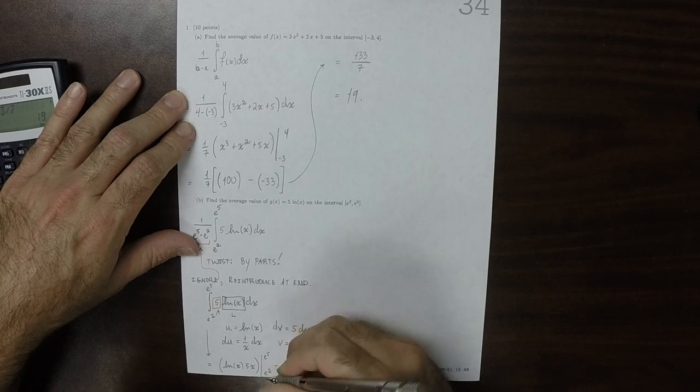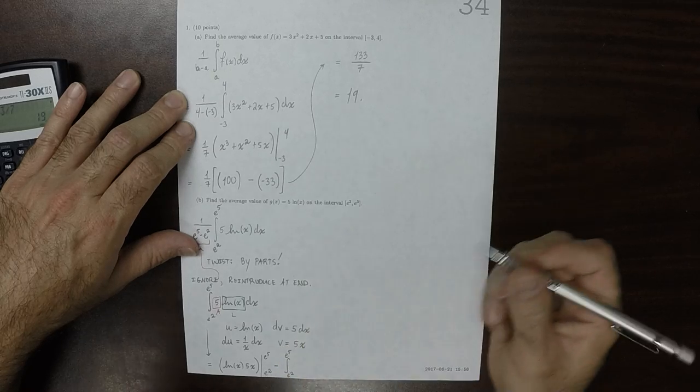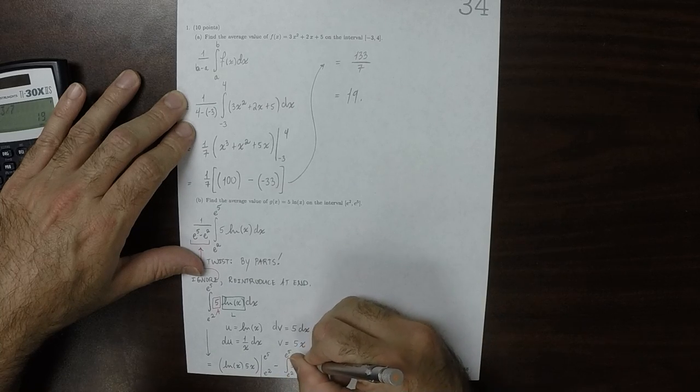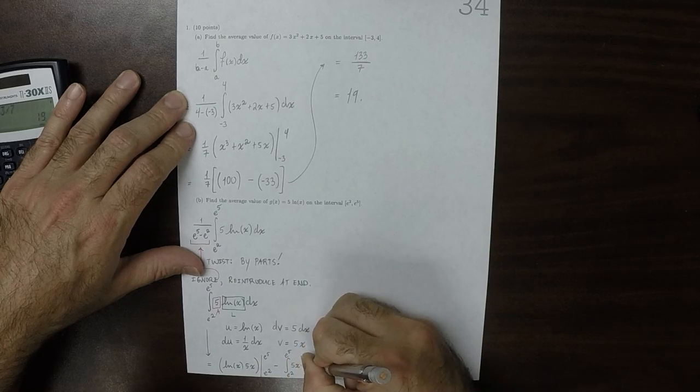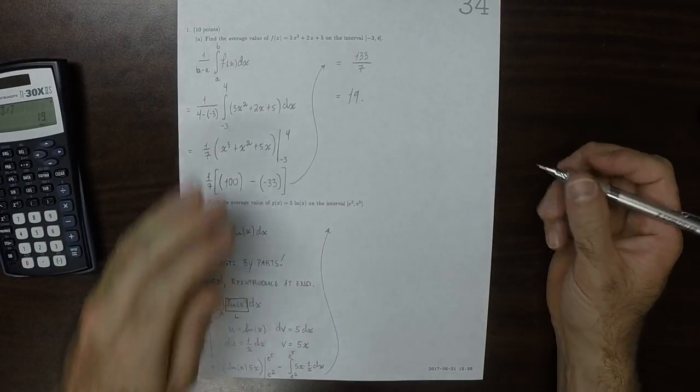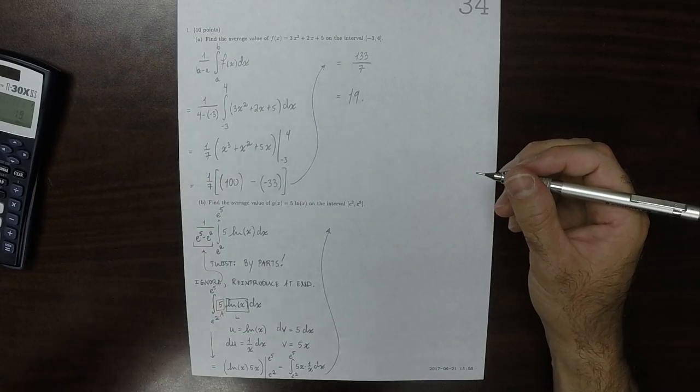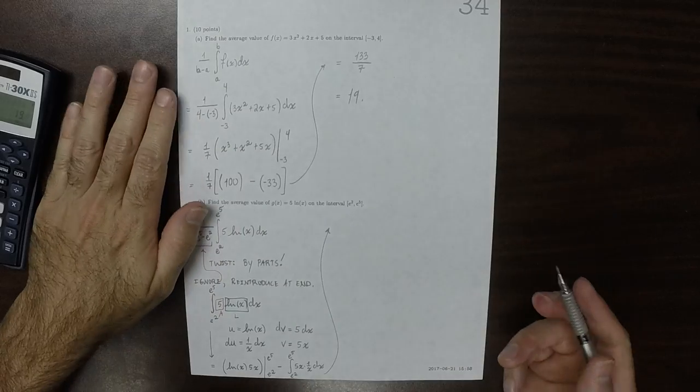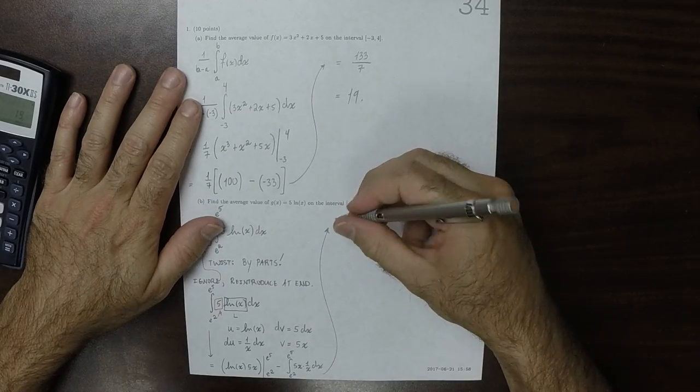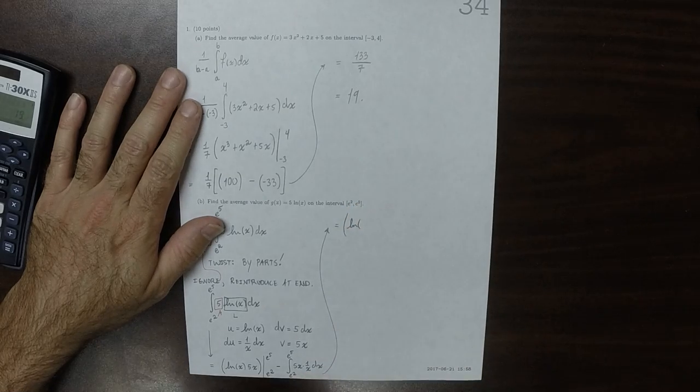and then minus the integral of v du. So 5x times 1 over x dx. So the x and the 1 over x, they cancel. So this would be,